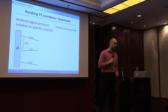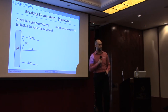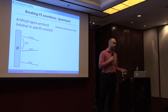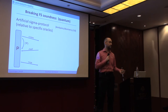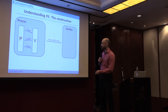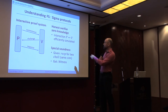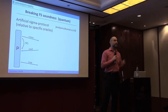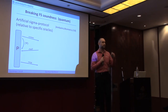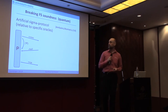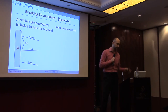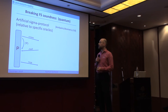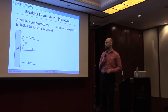Now, coming to the quantum setting, it turns out we have a problem. As we showed some years ago, if the sigma protocol has the same properties we assume in the classical setting — honest verifier zero knowledge and special soundness — then it is possible to construct some very artificial sigma protocol relative to certain artificial oracles. There is a lot of artificiality involved, but it is just to give a counterexample.